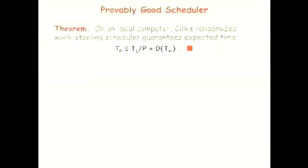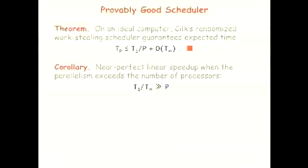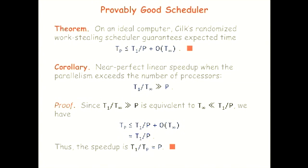In the Cilk scheduler, we have a theorem saying that the execution time T_p is approximately T_1 over p plus T_infinity. A corollary says you get near-linear speedup as long as the parallelism T_1 over T_infinity greatly exceeds the number of processors p. The proof is simple: if T_infinity is much less than T_1 over p, the span term is negligible and performance is T_1 over p, giving speedup equal to p.